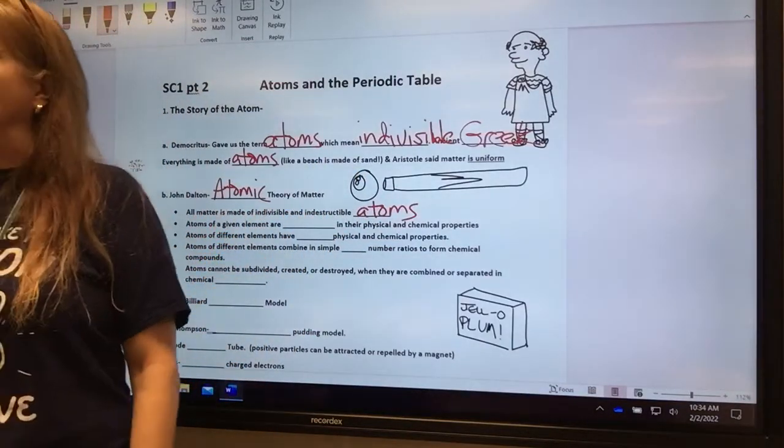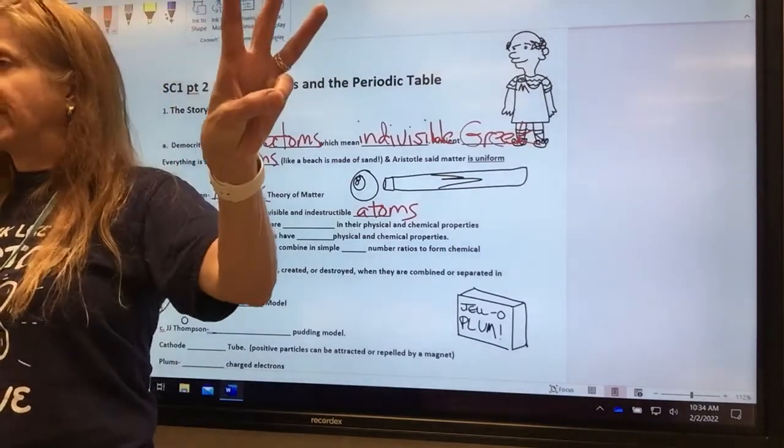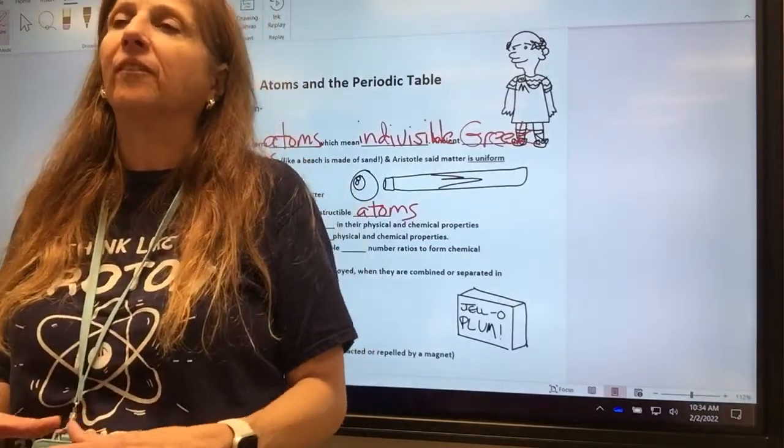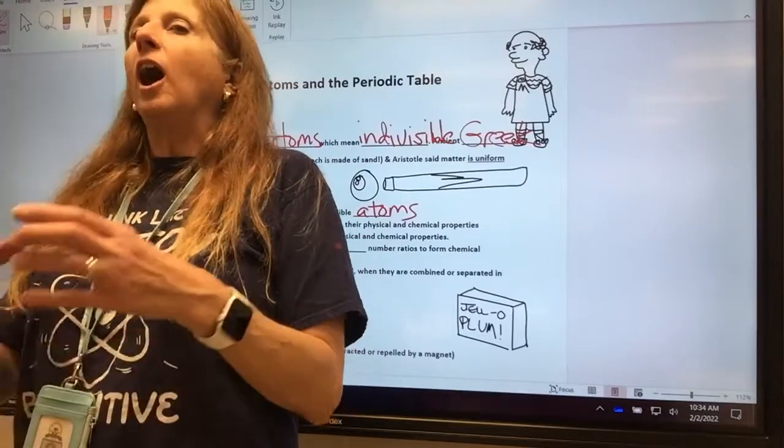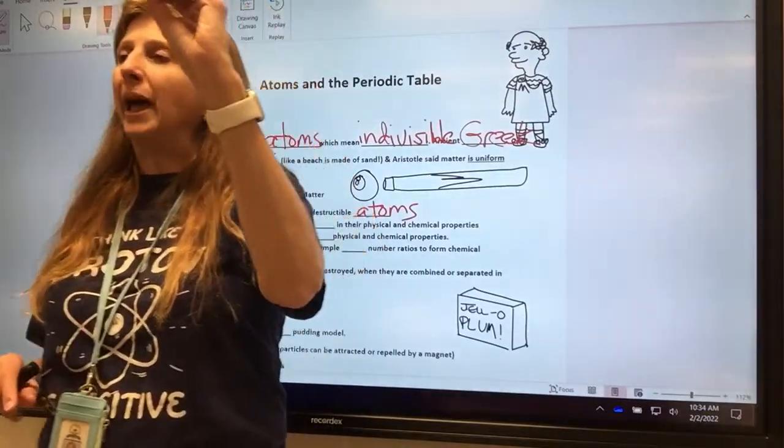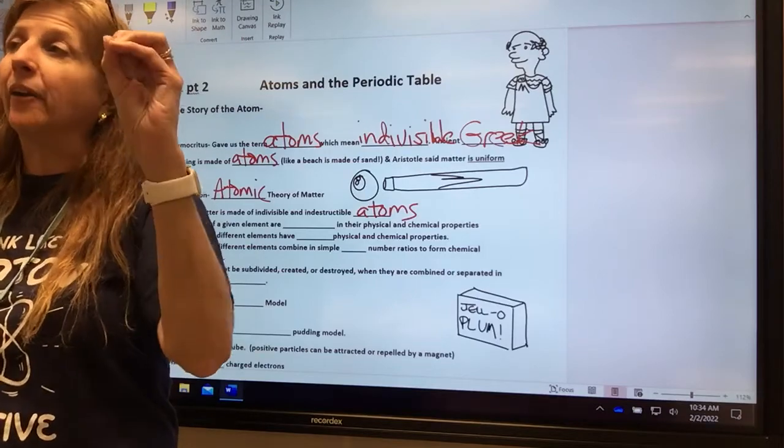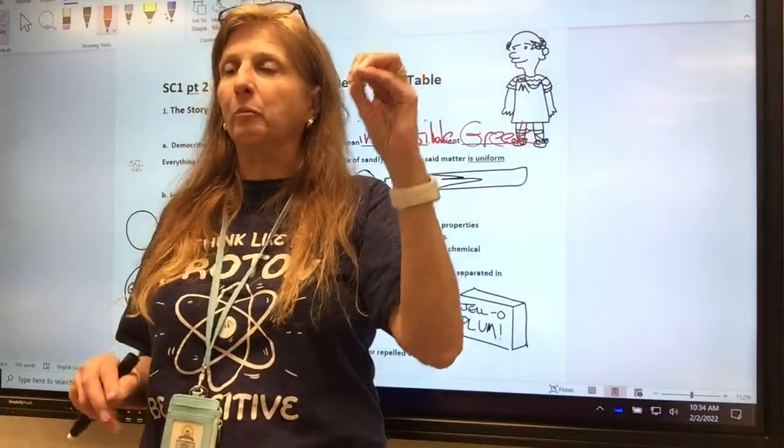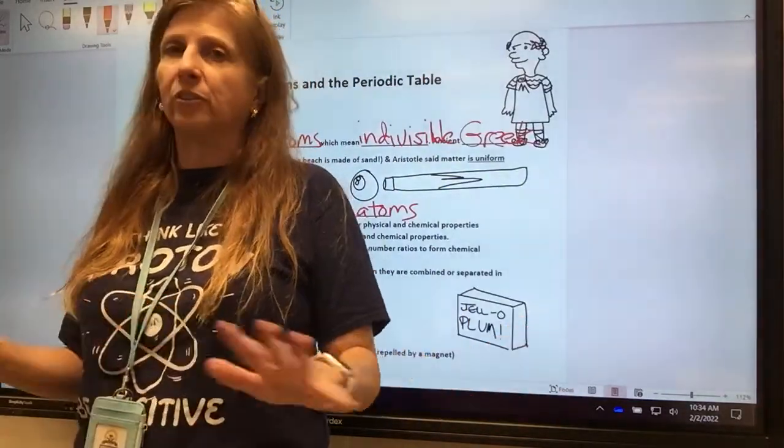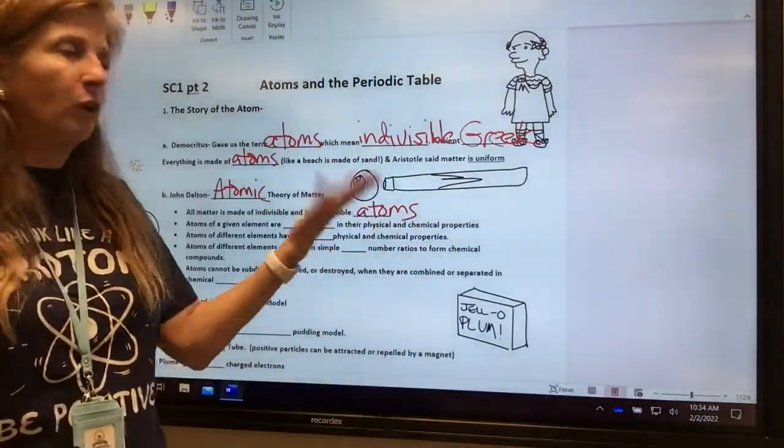He was correct. Is everything made out of atoms? Yes. But he wasn't completely correct. Are atoms indivisible? No. They can be divided into protons, neutrons, and electrons, can't they? But he was right that the smallest piece of matter that retains the properties of the element is the atom.